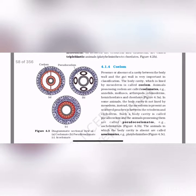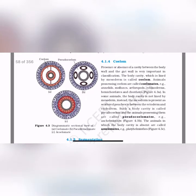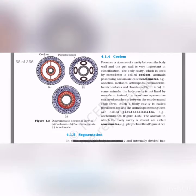Coelum: the presence or absence of a cavity between the body wall and the gut wall is very important in classification. The body cavity lined by mesoderm is called coelum. Animals possessing the coelum are called coelomates. If a cavity is present inside the mesoderm, we call it coelum; if it's present, the animals are coelomates. Examples: annelids, mollusks, arthropods.